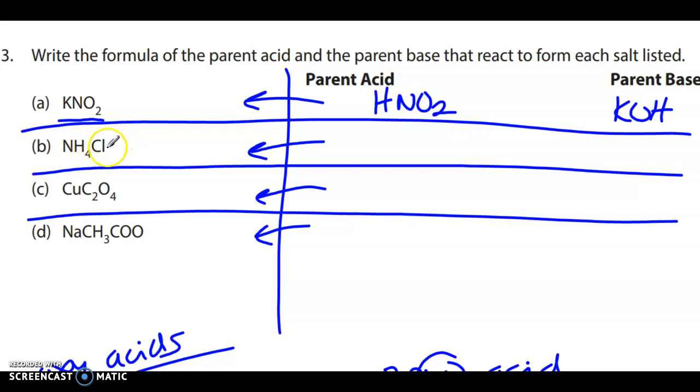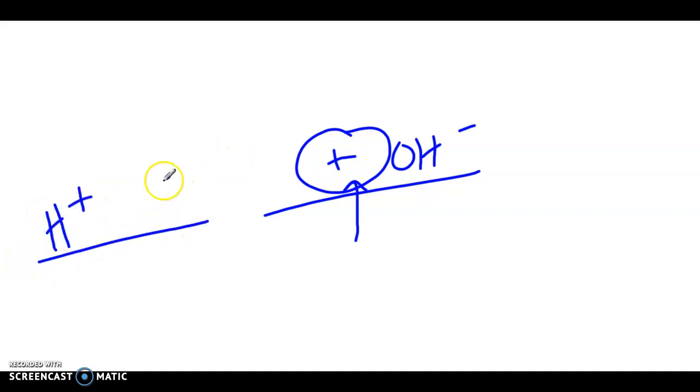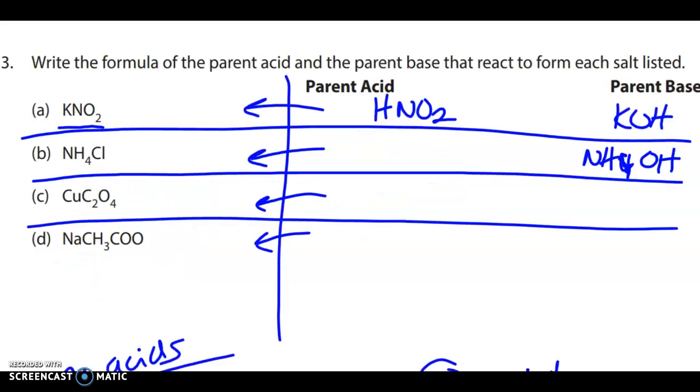Over here, NH4 and chlorine, right? So our hydroxide is actually ammonium hydroxide. So another way of how you're going to know what is matching with what, remember that hydroxides have a negative charge. So when you're placing it with something, that something has to have a positive charge, right, in order to make a compound.